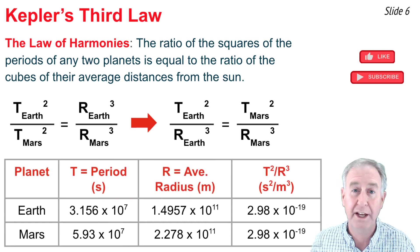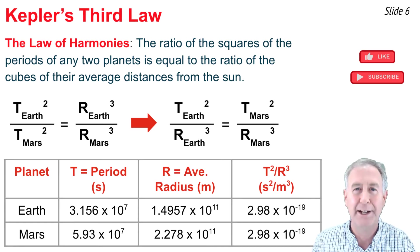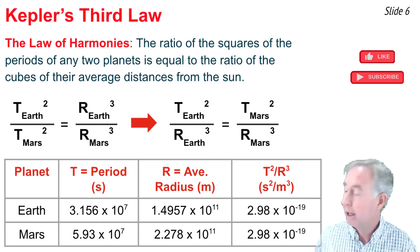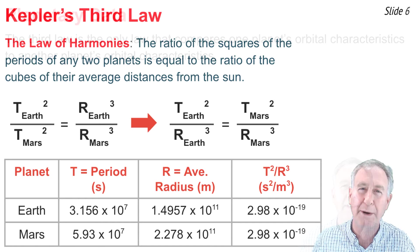And if I were to take the data for the radius and the period for Earth and for Mars and do the math and find out what is the ratio of the period squared to radius cubed, I'd have it here in the last column, and you'll notice it's the same for Earth as it is for Mars.